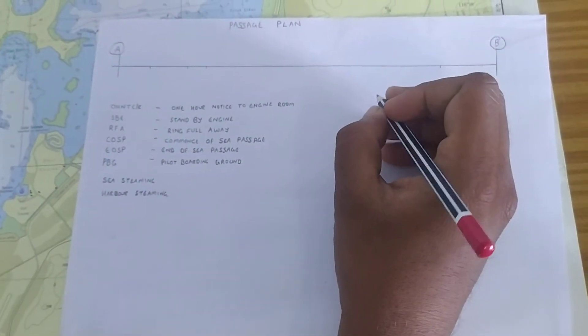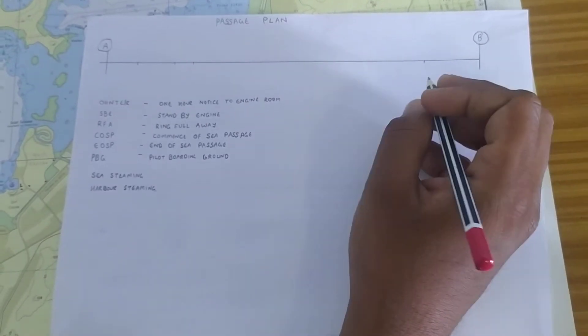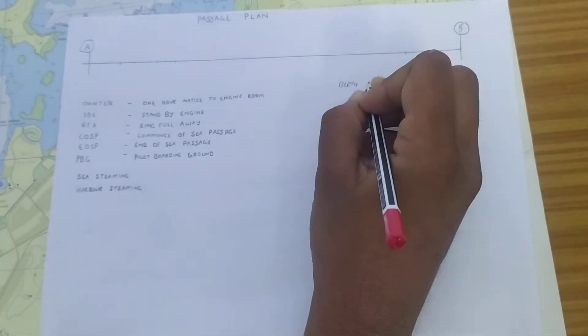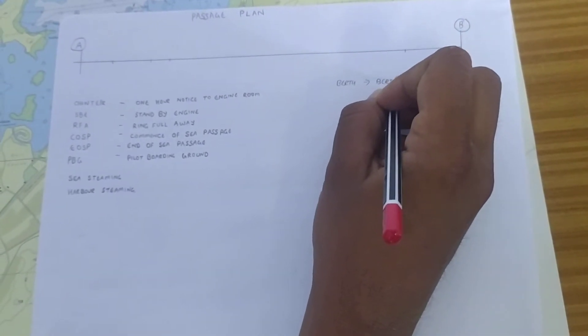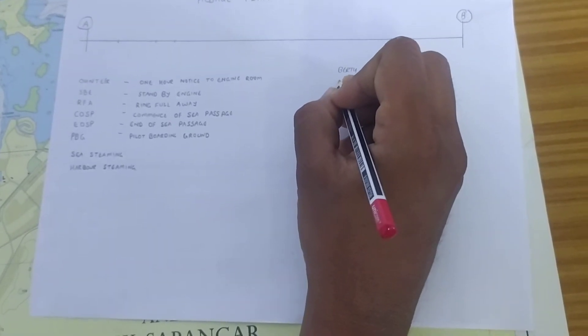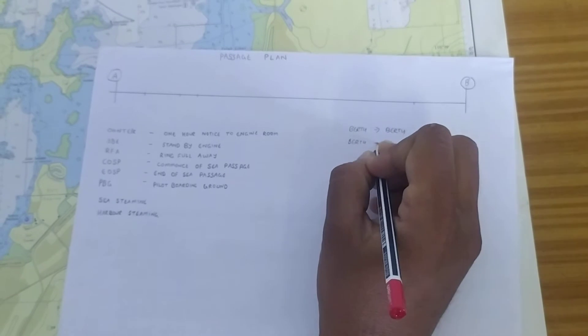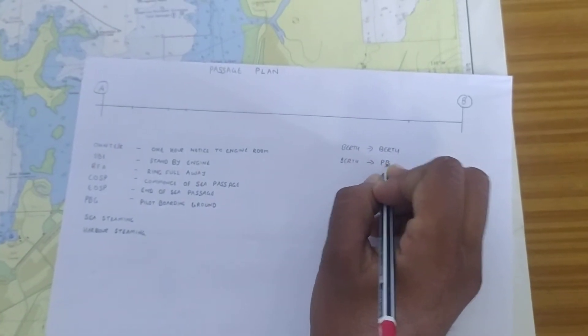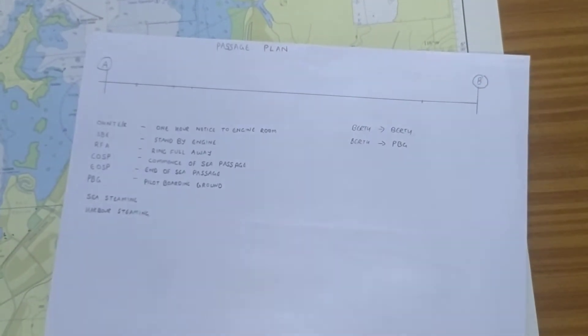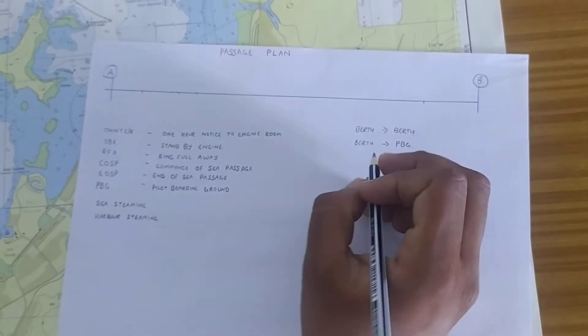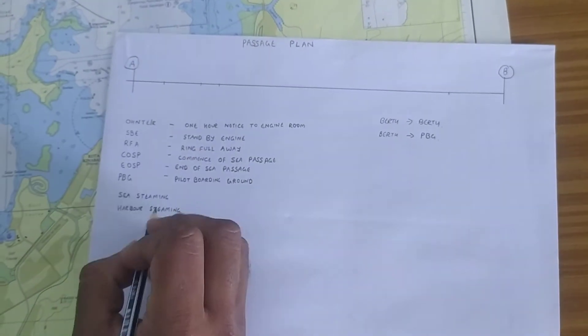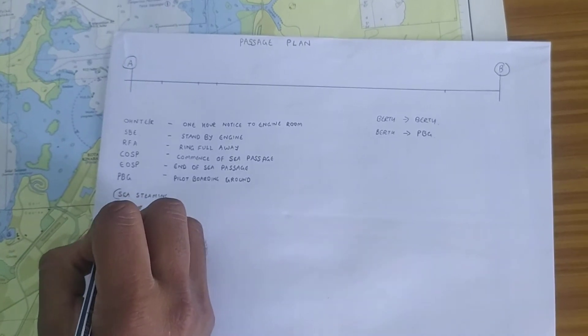First of all you will be planning a passage from point A to B, it will always be from berth to berth, the distance will always be from berth to pilot boarding ground. Why we do this is, we need this for the distance of sea steaming and for harbour steaming.